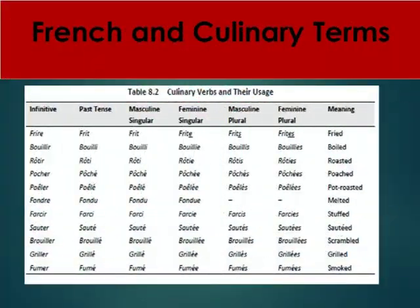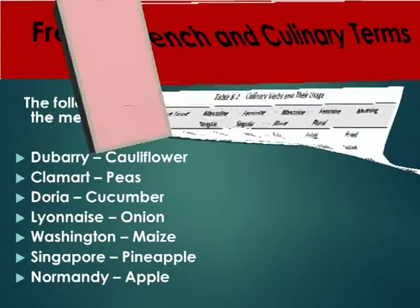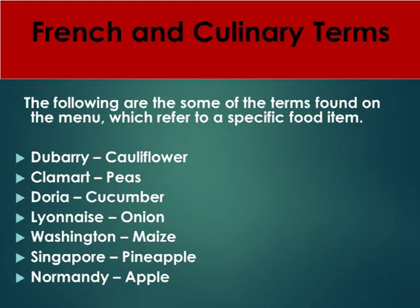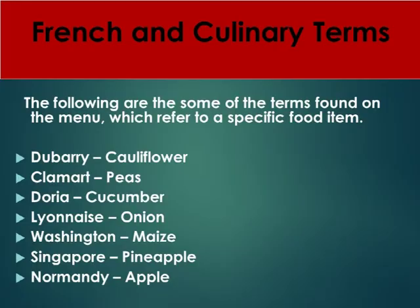Culinary verbs and their uses. The following are some of the terms found on the menu which refer to a specific food item: Du Barry refers to cauliflower; Clamart refers to peas; Doria refers to cucumber; Lyonnaise refers to onion; Washington refers to maize; Singapore refers to pineapple; Normandy refers to apple.